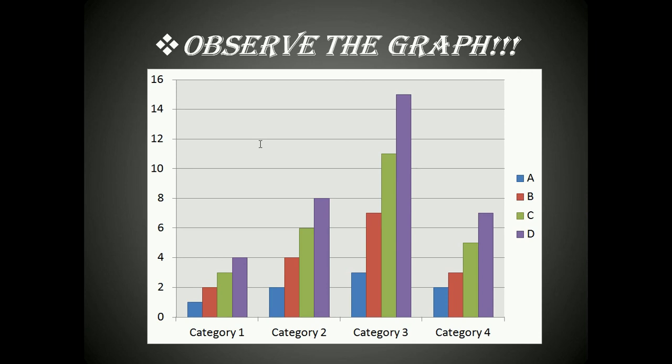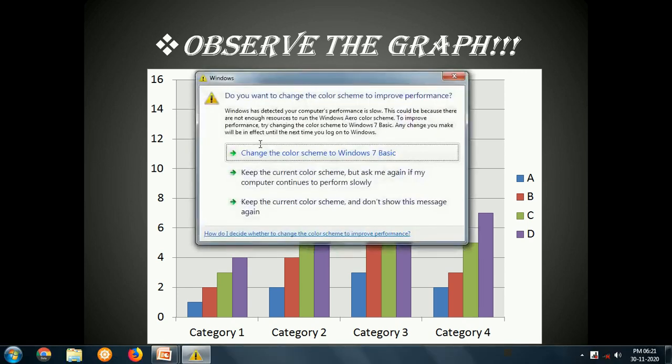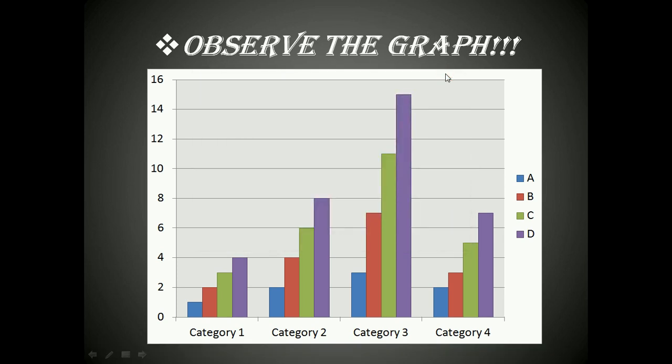To understand or guess the name of the topic, let us observe the graph shown in the picture. There is a bar graph — all of you know about bar graphs. There are four categories mentioned here: category one, category two, category three, and category four. If you observe carefully, out of these four, one category is completely different from the other three. What is that category?